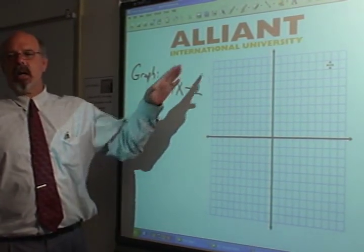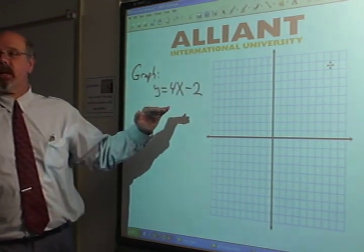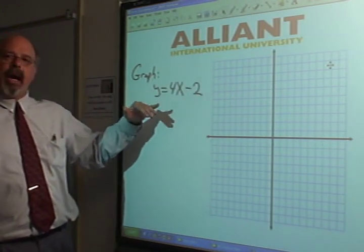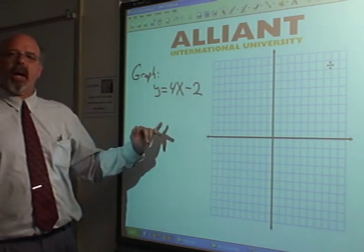So there's an infinite number of solutions when connected form a straight line. That's what this really is, okay? But there's a shortcut here built into this y equals mx plus b formula that tells you how to graph the line.